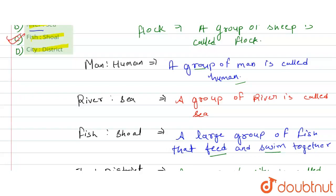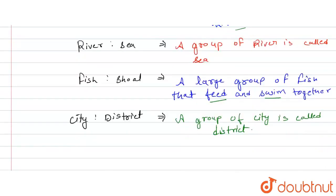Our right answer is option C, that is fish and shoal.